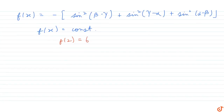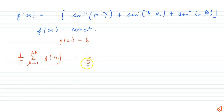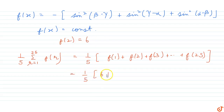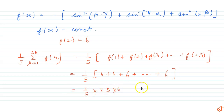Now we have to find the value of (1/5) times the summation with r going from 1 to 25 of f of r, which equals (1/5) into f(1) + f(2) + f(3) + ... + f(25). Since f of x is a constant, every value of f of x is 6. So this becomes (1/5) into 6 times 25, which equals (1/5) into 150, giving us 5 × 5 × 6 divided appropriately, that is 30.